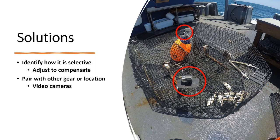We can also account for some gear selectivity shortcomings by combining with other gears that sample different ages and sizes better. Cameras are the prime example — they tend not to have the same selectivities as the traps and really complement each other well. There are species like goliath grouper or shark species that are too large for the traps, and others like hogfish or lionfish that are prevalent around the traps but hardly get caught in them because they're not interested in the bait. These data in conjunction with catch information provide a much more robust depiction of what many of these fish stocks look like.